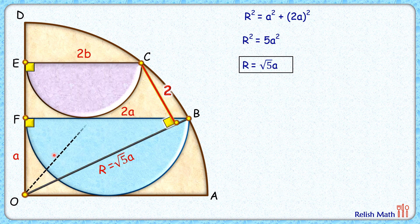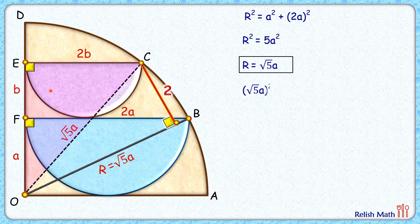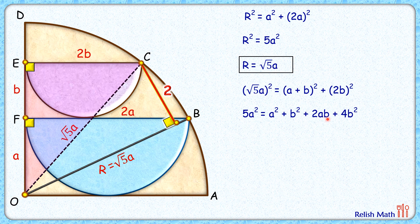Let's join OC — that's also a radius, so it equals √5·a. Now considering the same setup, r² = a² + (2a)². Here the EF length is the radius of the purple semicircle, or b cm. Applying Pythagoras theorem we get (√5·a)² = (a + b)² + (2b)², which expands to give terms including plus 4b².